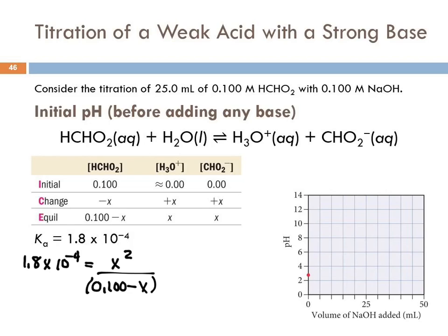We solve for x. The x-is-small approximation should work here. So we take the square root of 1.8 times 10 to the minus 4 times 0.1. I'm getting x equals 4.24 times 10 to the minus 3, which equals the hydronium ion concentration. We take the negative base-10 log of that, and I get a pH of 2.37.